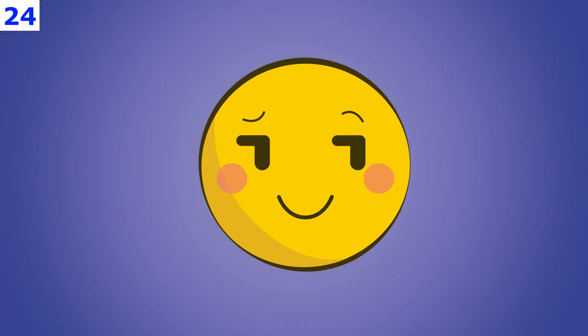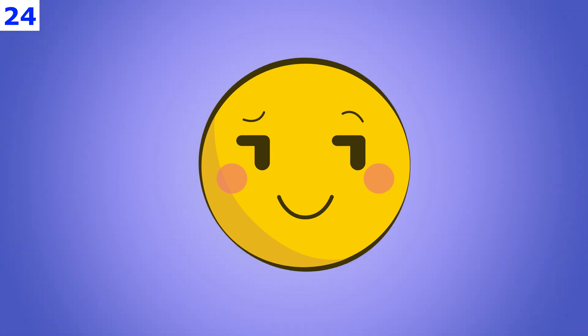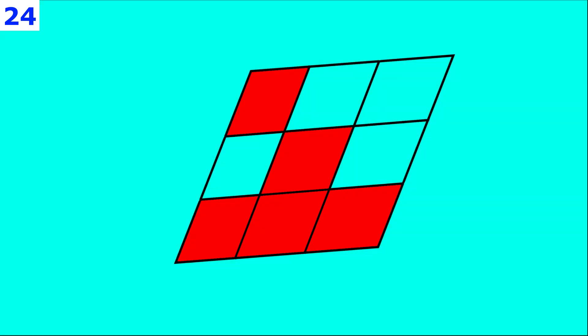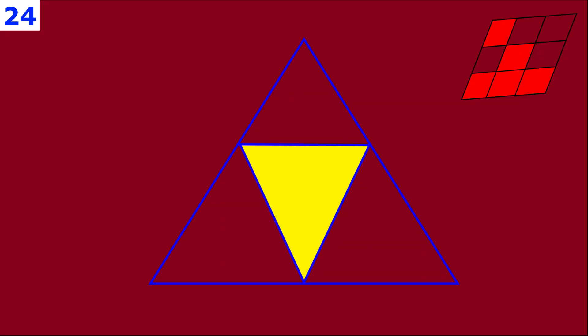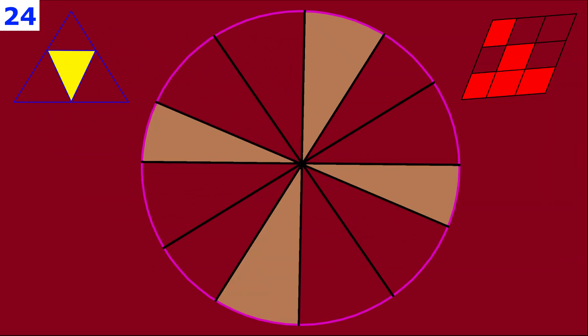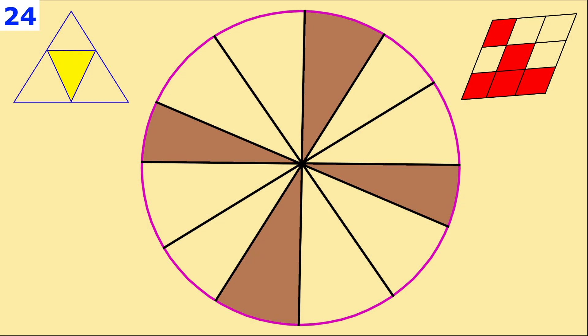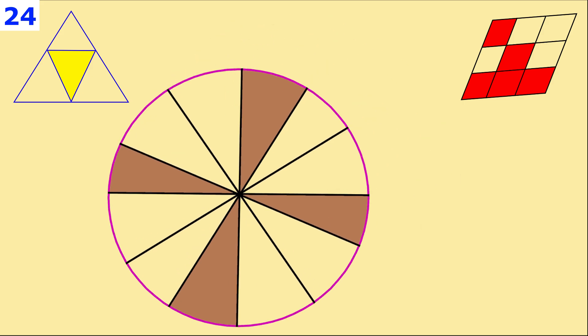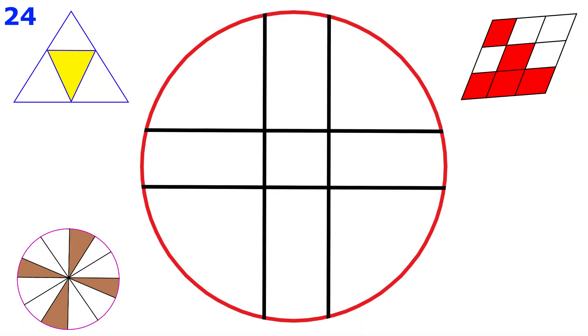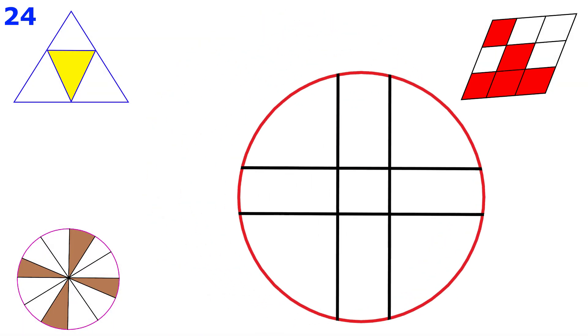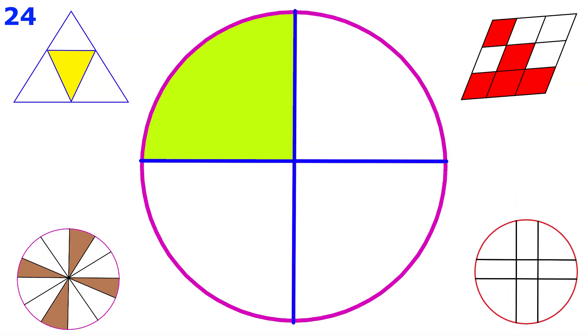My dear student friend, in front of you is a very nice picture. A picture — a diachrome. So, figure, figure. What kind of figure? Circle, rectangle, triangle.